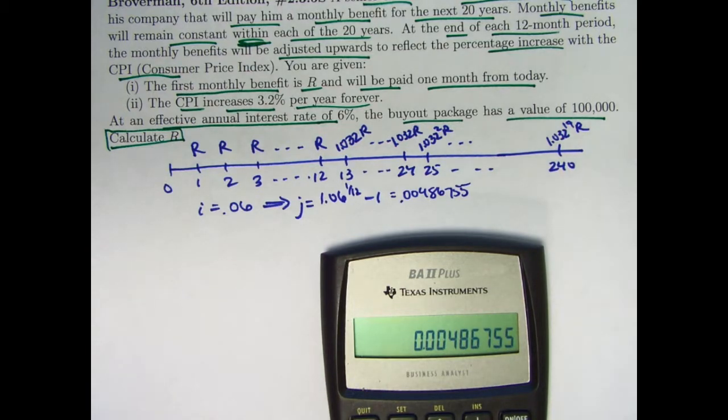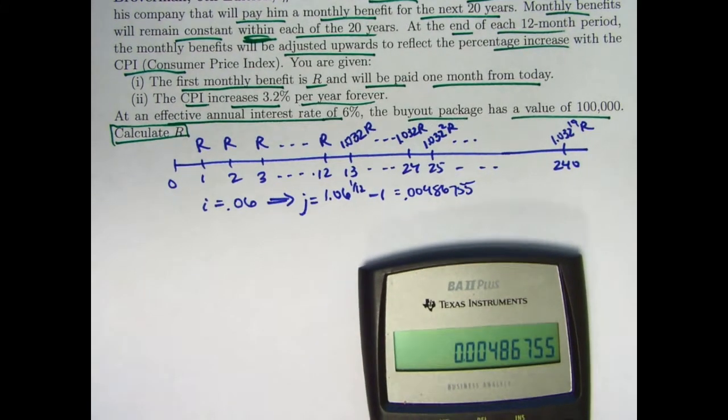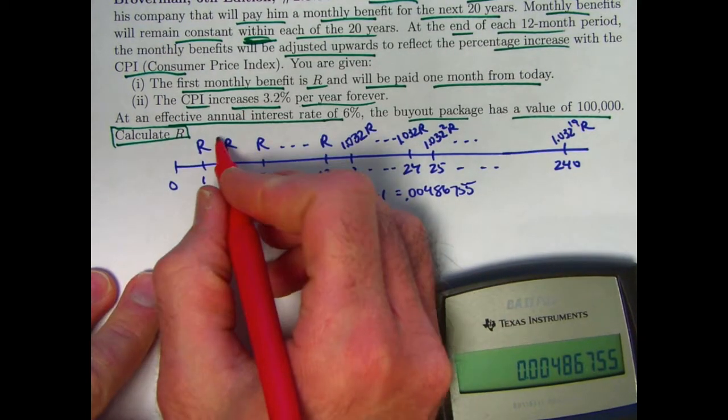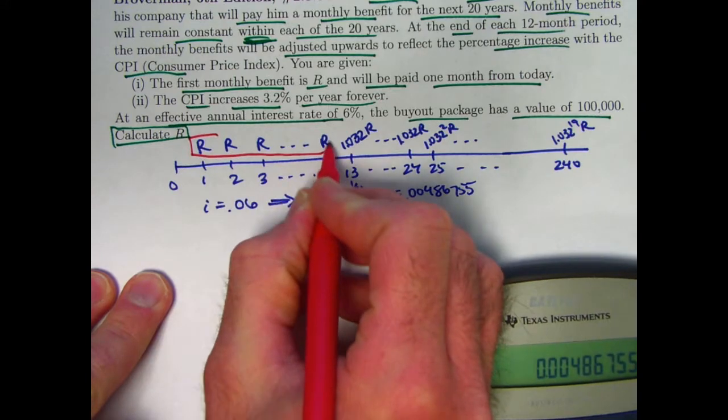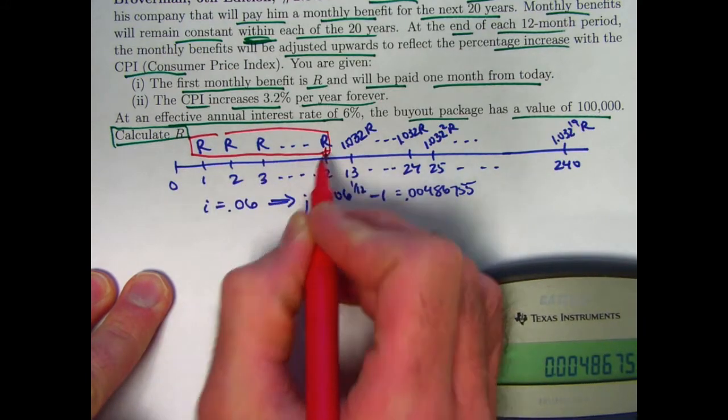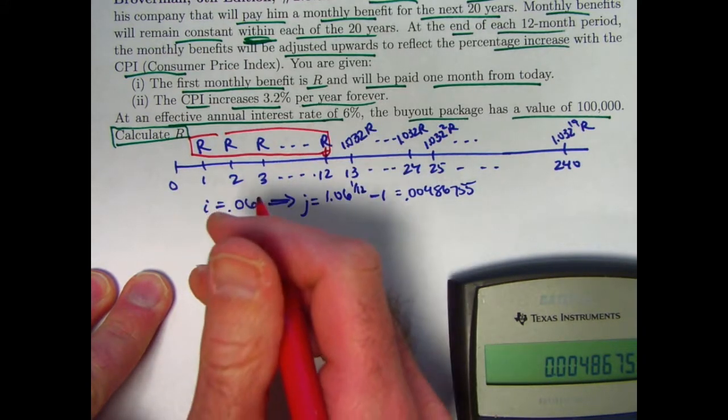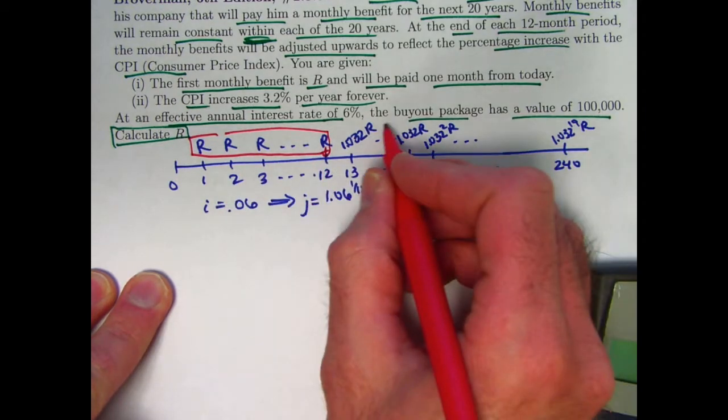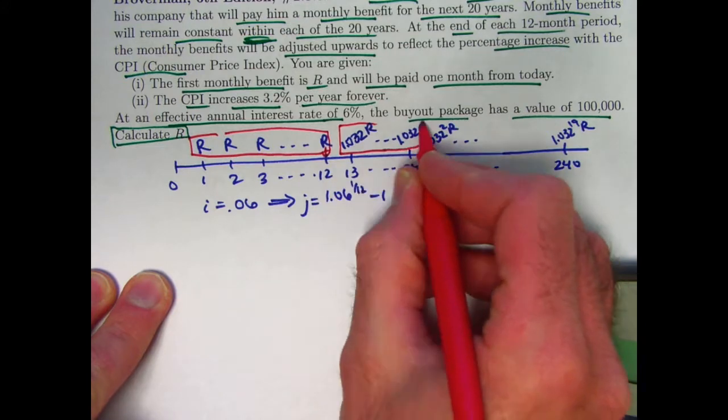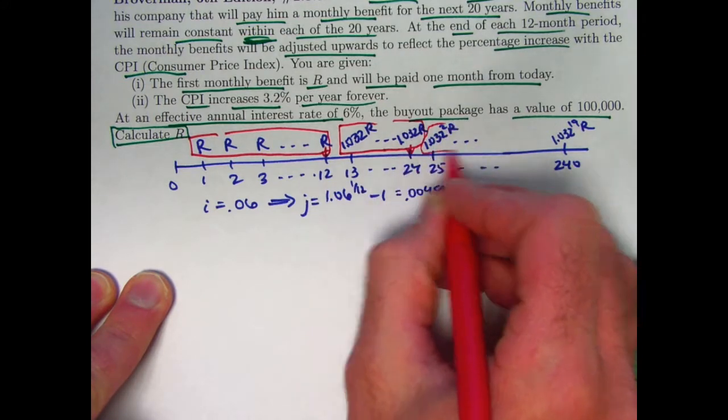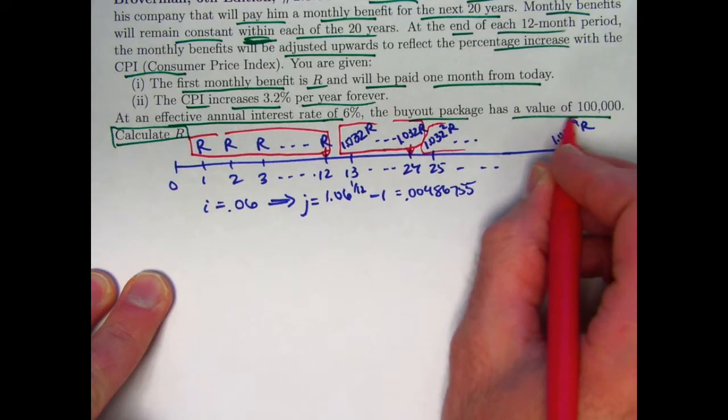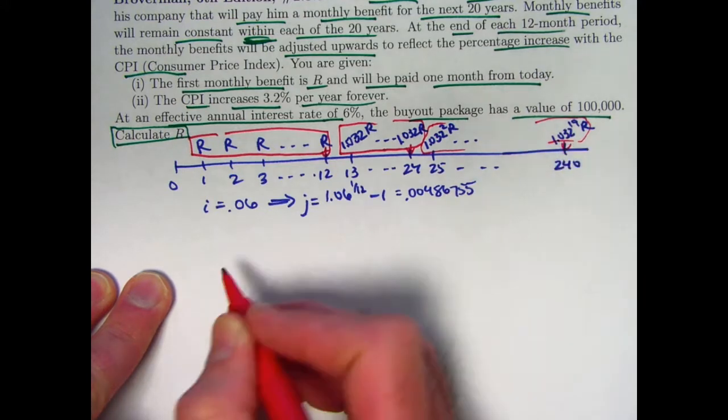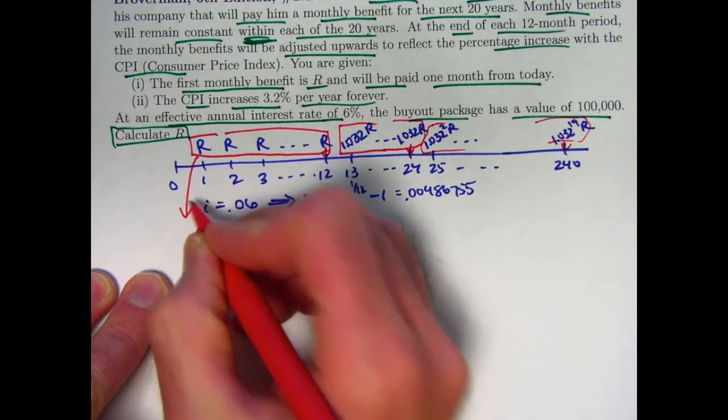Let's go ahead and change our perspective now to years. How could we do that? What I'm going to do to solve this problem, ultimately, the present value is 100,000. But I think what I'm going to do is I'm going to find the future value of each year's payments immediately after the last payment, find the future value as an annuity immediate. So for the first year, we're going to evaluate the future value at time 12. For the second year, we'll evaluate the future value at time 24. For the third year, it'd be at time 36. For the last year, it's going to be at time 240. Let's focus on the first year first.